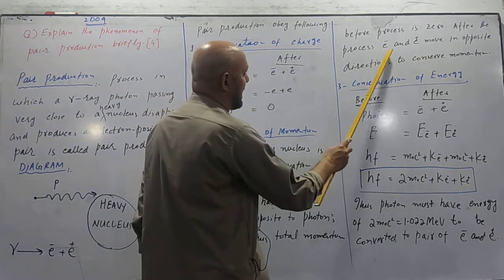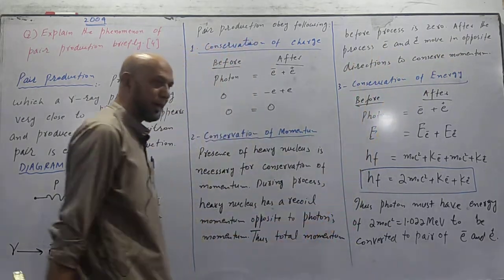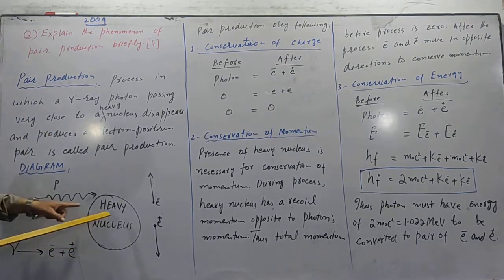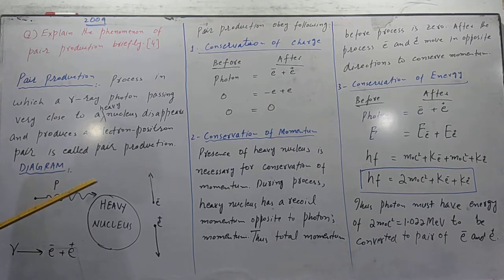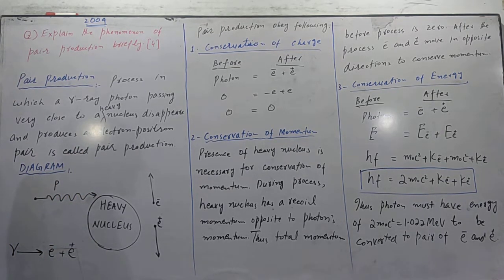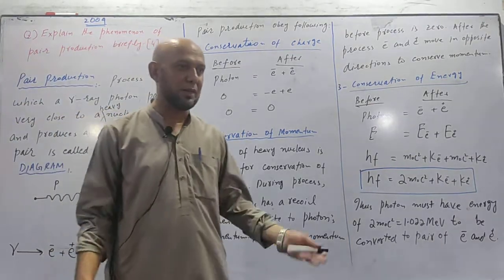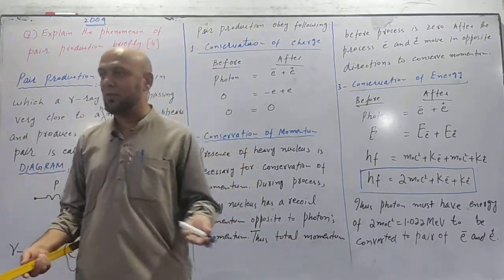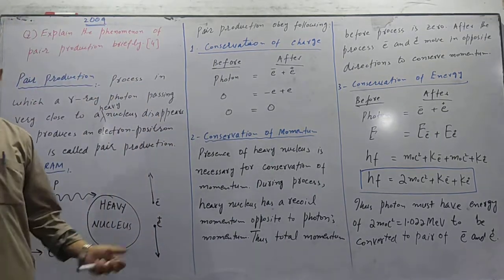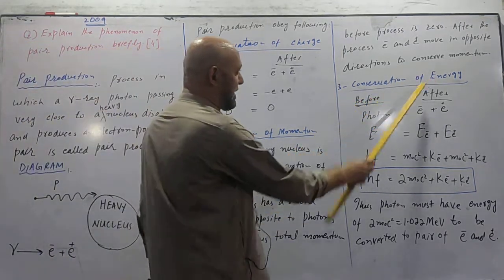After the process electron and positron move in opposite direction to conserve momentum. If heavy nucleus is not there, momentum won't be conserved. So without heavy nucleus this process cannot happen. Question can be asked: can pair production happen in vacuum? No. In vacuum, photon will pass by what? With whose help will it conserve its total momentum?